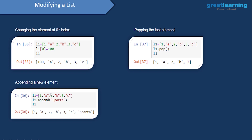We can also append a new element at the end or pop the last element. To add a new element at the end, we use the append method — give in the name of the list, use the dot operator, then append, and pass in the value. Typing in Sparta appends it at the end of the list. To pop the last element — which means removing it — we use L one dot pop, and it automatically removes the last element. After using pop, the Sparta value was removed from the list.